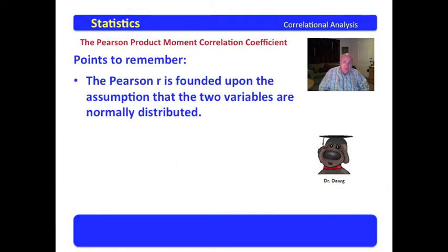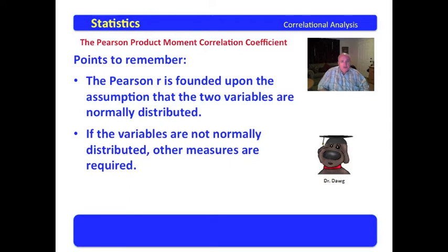Now, there are some points to remember. The Pearson R is founded upon the assumption that the two variables are normally distributed. In other words, if you're comparing two things, you're assuming that the distributions of each are normal. That's a very important point to note. Most people overlook that, and we'll deal with that later in this course.